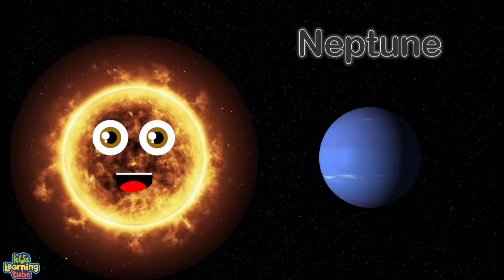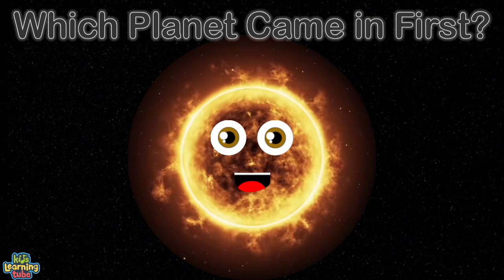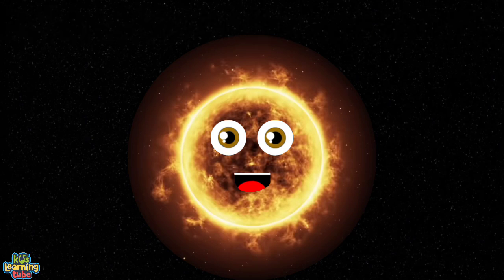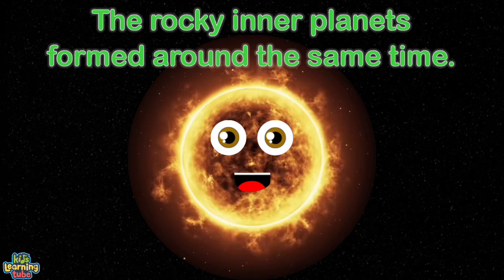Let me tell all of you planets who really came in first. Listen to how astronomers placed each planet from birth. When I got cooler than when my core was fused, the rocky inner planets formed around the same time, it's true. Mercury,